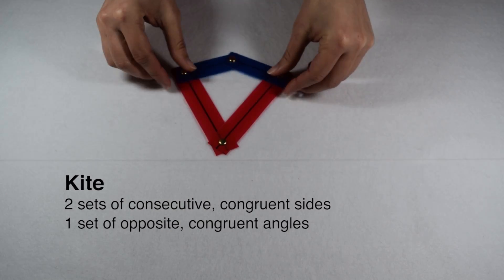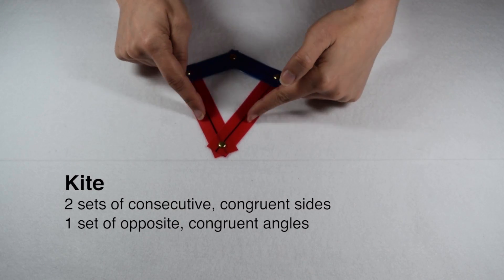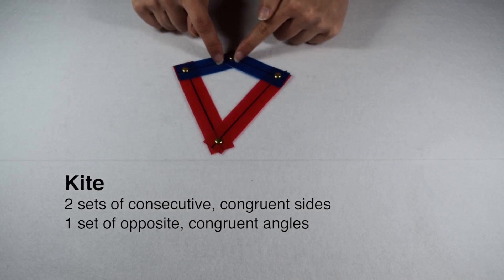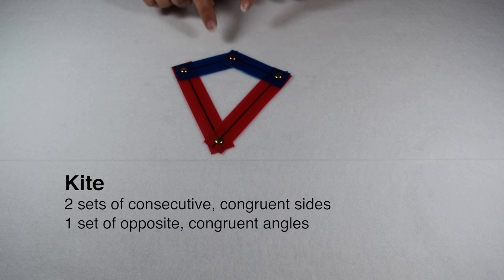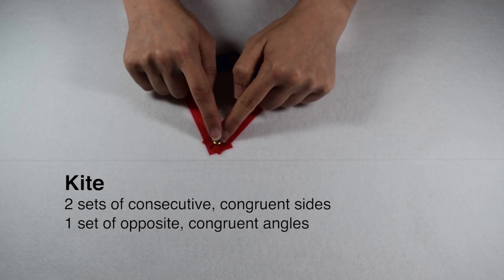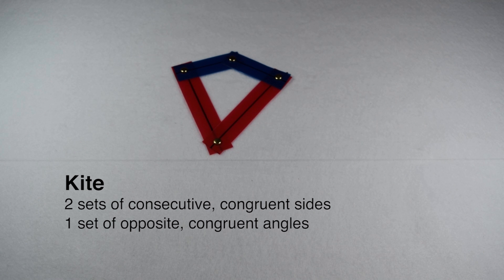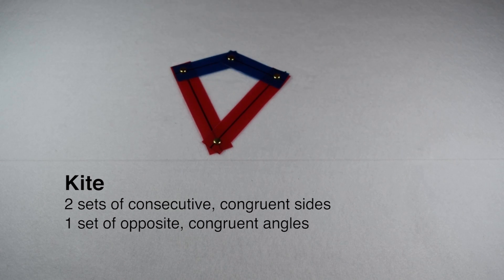In order for a figure to be a kite, it has to have two sets of congruent sides. However, these congruent edges are going to be consecutive, meaning they join at an endpoint. On a kite, we also need to look for one set of congruent angles.